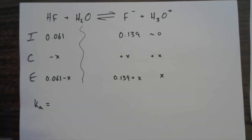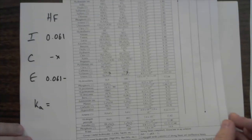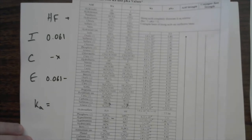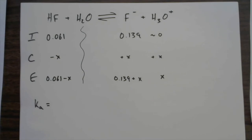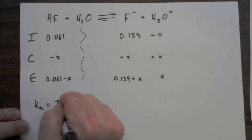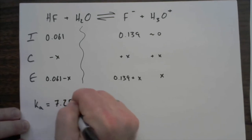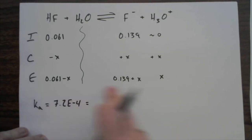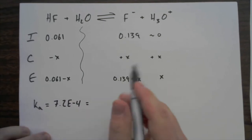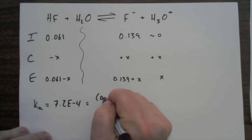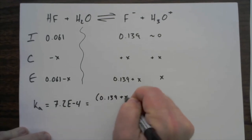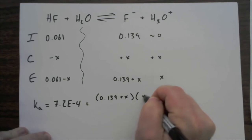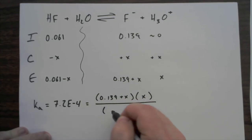So my Ka, if I just look it up—I'm just turning to one of my little sheets here, it doesn't look like that's going to come through very easily—but I'm just looking up the Ka value for HF is going to be 7.2E to the minus 4. And let's go ahead and just write that out with our equilibrium expression. So products over reactants, I think I'm going to have a 0.139 plus x up there, there's going to be an x by itself, and then over the denominator is going to be this guy.